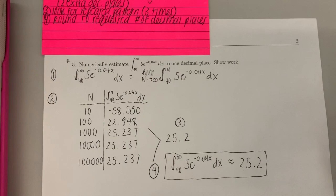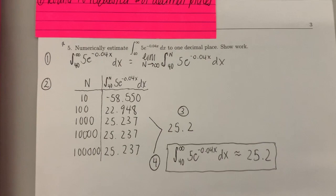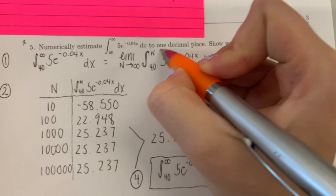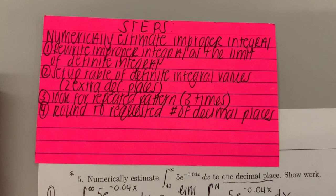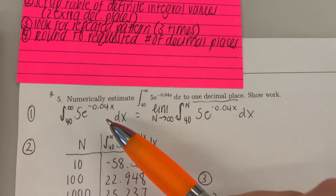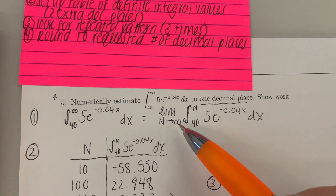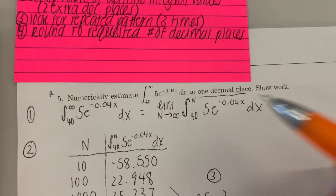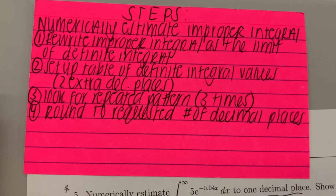Number 5: numerically estimate the integral from 40 to infinity of 5e to the negative 0.04x dx to 1 decimal place and show our work. Step 1, rewrite the improper integral as the limit of the definite integral. We rewrite it as the limit as n approaches infinity of the integral from 40 to n of 5e to the negative 0.04x dx.